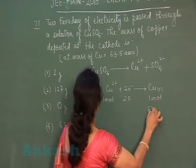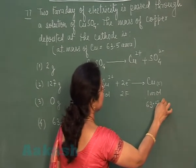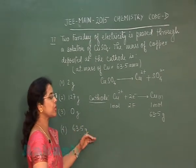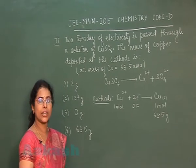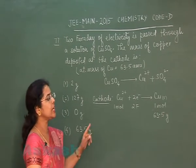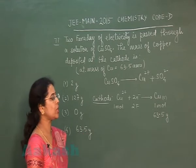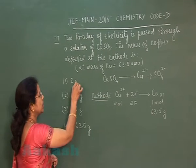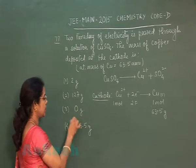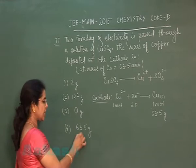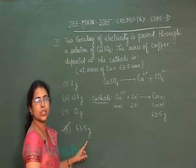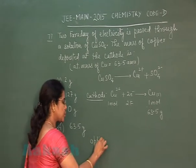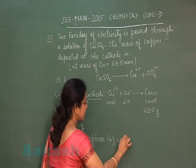The mass of 1 mole copper solid is 63.5 gram, which is the gram atomic mass. This question mentions that 2 Faraday of electricity is passed, so 1 mole copper will be deposited in solid state. Checking the options: first incorrect, second incorrect, third incorrect, and fourth option 63.5 gram is correct. Option 4 is correct.